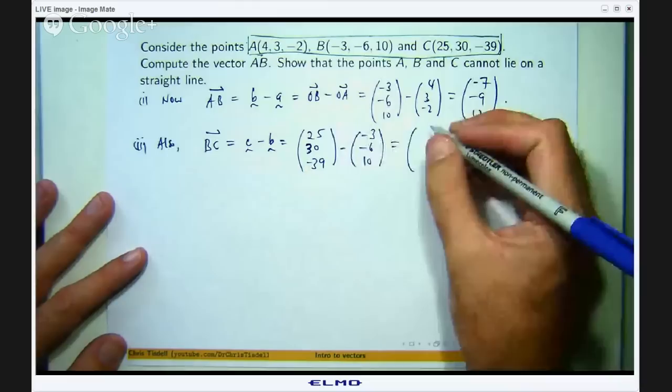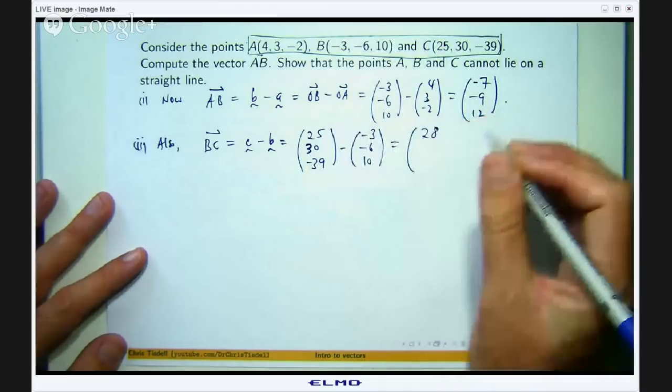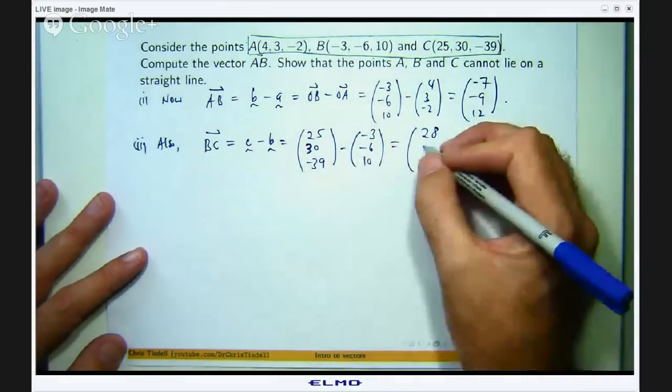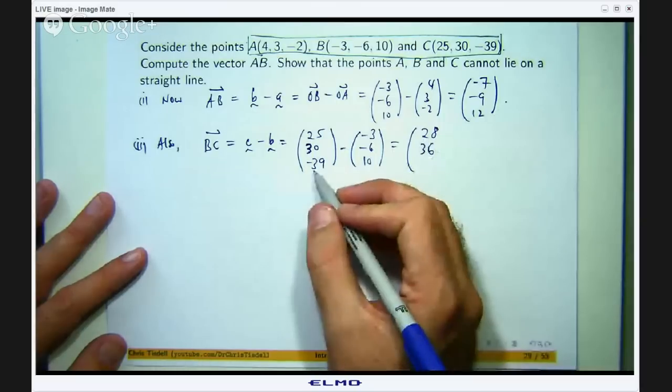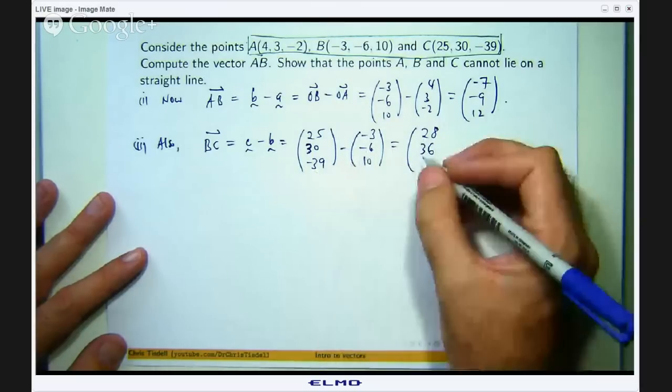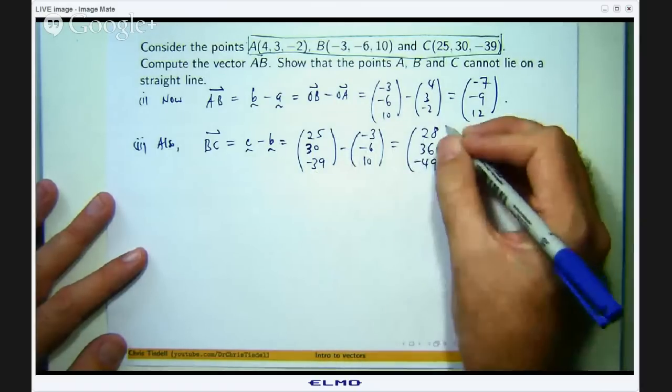So let us work in a component wise fashion again. So 25 minus negative 3 is 28, 30 minus negative 6 is 36, negative 39 minus 10 is negative 49.